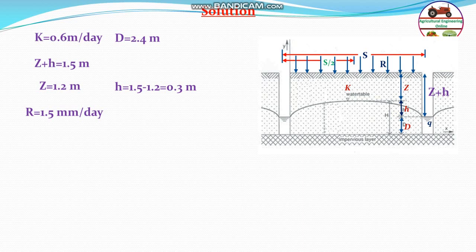We can write down that 1.5 millimeter per day will be equal to 0.0015 meter per day.